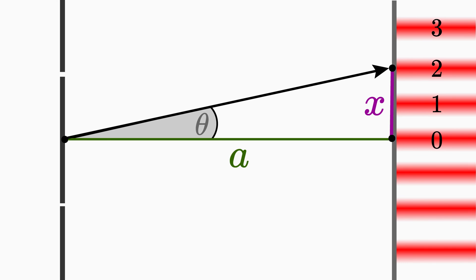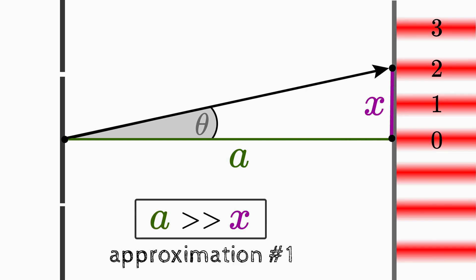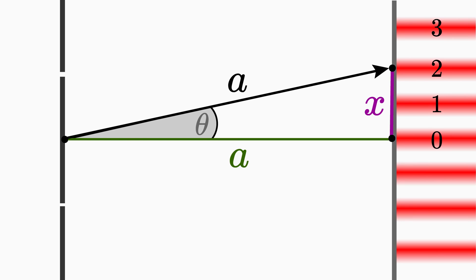So that it doesn't get too complicated, we make two approximations. They are justified if we consider a few things. The first approximation is as follows. The distance a between the screen and the double slit is much larger than the distance x of two fringes on the screen. So in order for this approximation to be applicable, we have to place the screen as far away as possible from the double slit in the experiment. This in turn means that the angle theta becomes very small. Then the distance a becomes approximately as large as the hypotenuse. This results in the geometrical relation sin theta is approximately equal to x over a, because sin theta is defined as the ratio of the opposite side to the hypotenuse.